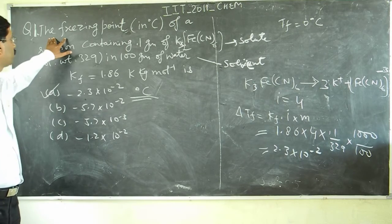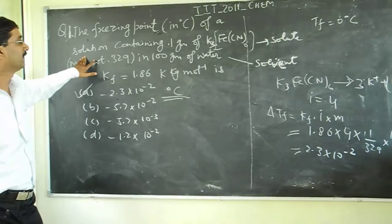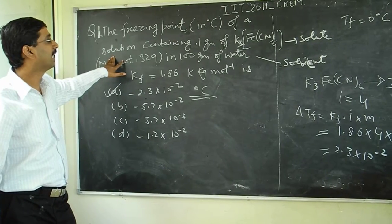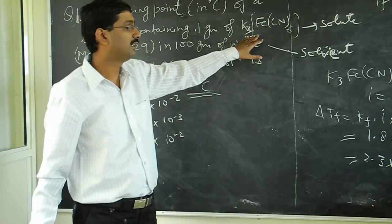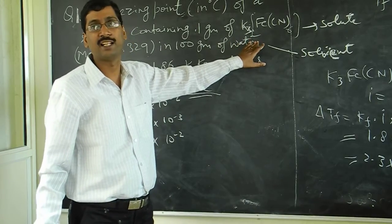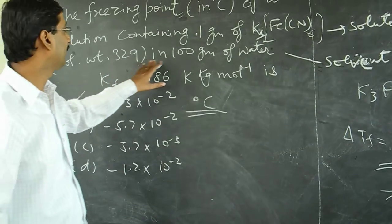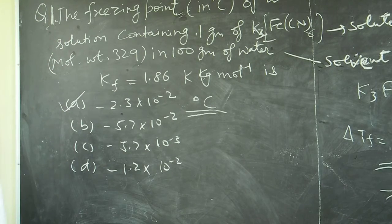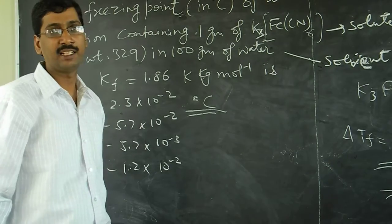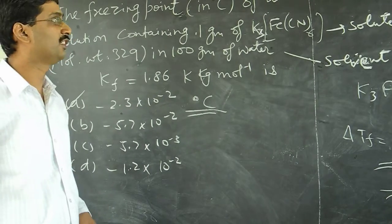Here we have the question: the freezing point in Celsius of a solution containing 0.1 gram of K3Fe(CN)6, this compound name is potassium ferrocyanide, molecular weight 329, in 100 grams of water. So you have 0.1 gram of potassium ferrocyanide dissolved in 100 grams of water. What is the freezing point of the solution?